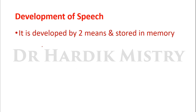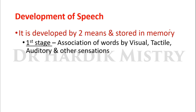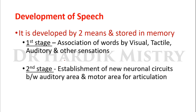Development of speech. It is developed by two means and stored in memory. There are two stages: first stage, association of words by visual, tactile, auditory and other sensations. And second stage, establishment of new neuronal circuits between auditory area and motor area for articulation.